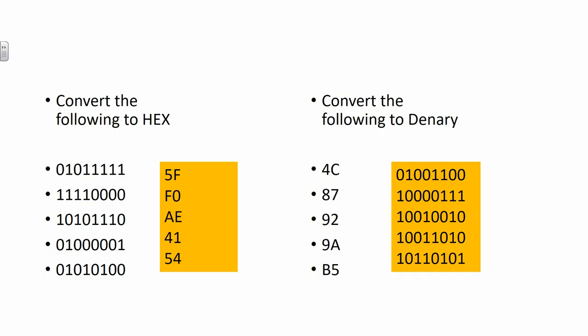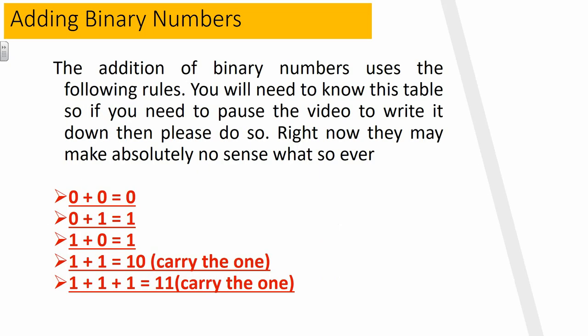Double check your answers. If you've got any complaints, put it in Teams and confer with each other if you're unsure. Now we're going to do binary addition — this is tricky to get your head around at first. Here are the five rules: 0+0=0; 0+1=1; 1+0=1; 1+1=10; and 1+1+1=11. Those last two rules will make no sense right now — I'll explain why. Write those down; pause if you need to.